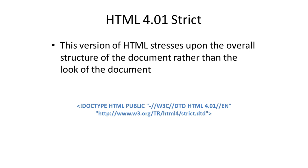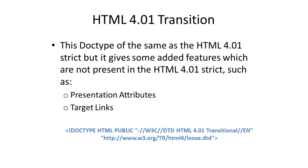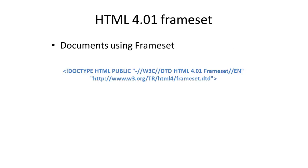Another commonly used doc type is the HTML 4.01 transitional. This doc type is the same as the HTML 4.01 strict document, but it gives some added features like the presentation attribute and the target links. Documents that use frames should be using the HTML 4.01 frameset doc type.